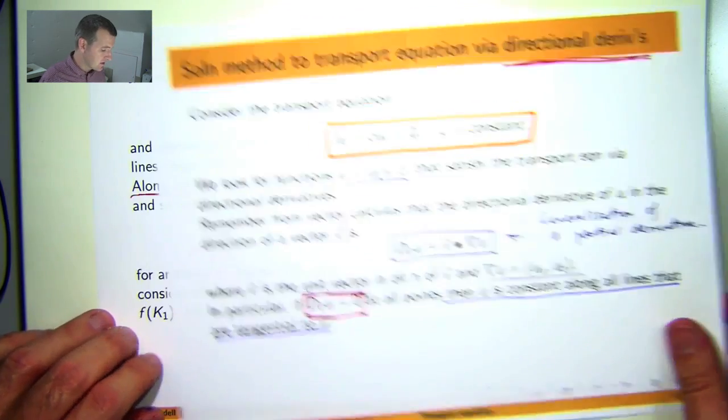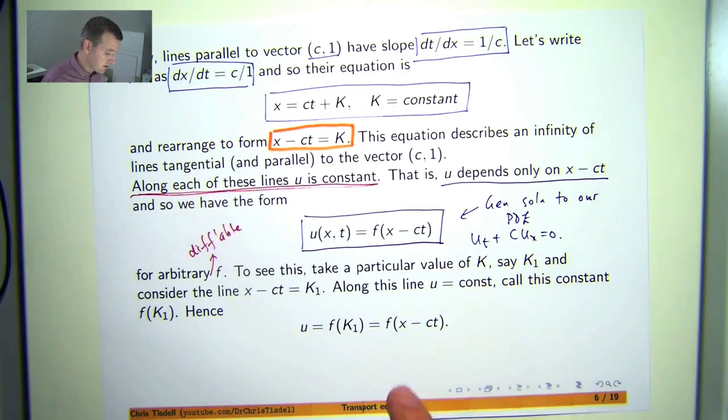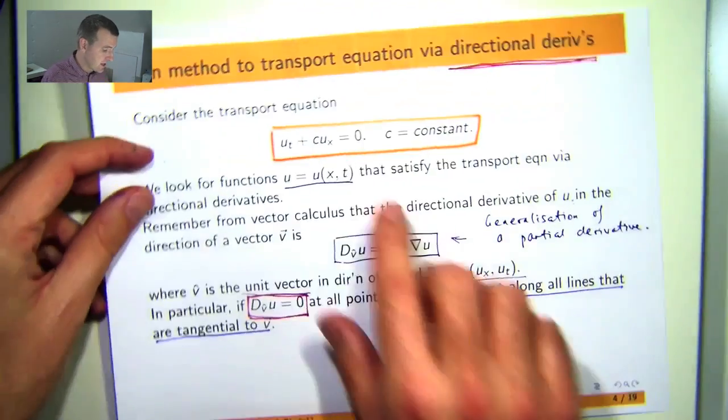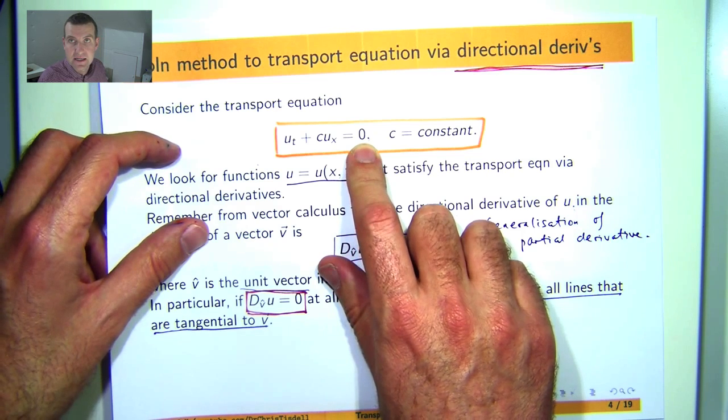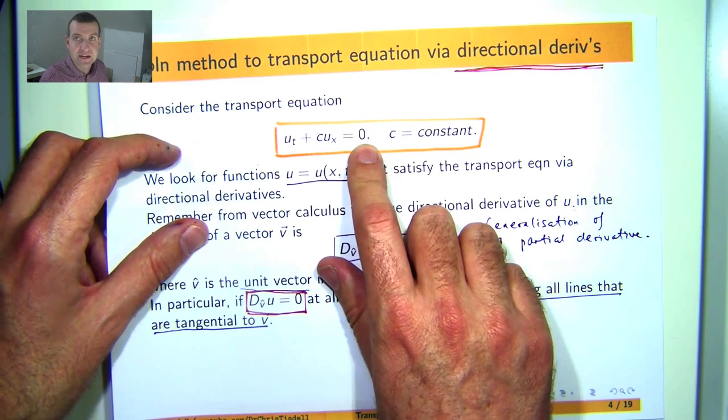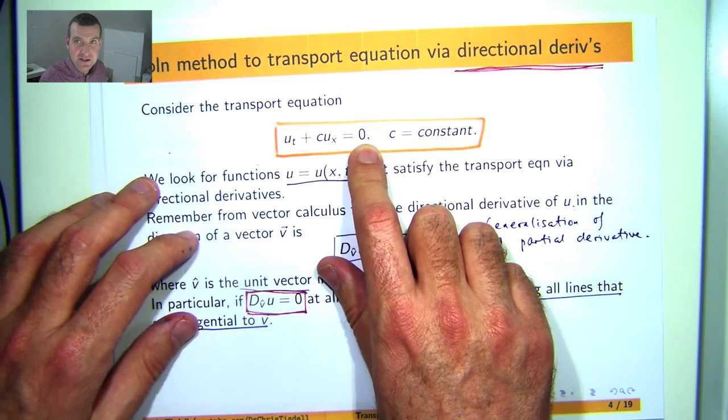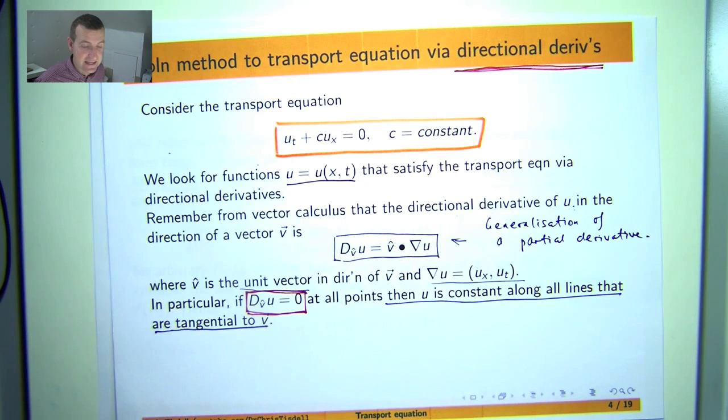Now in other videos, I'm going to do examples of solving particular transport equations. And I'll also solve the inhomogeneous or the non-homogeneous form of the transport equation. So for example, instead of having 0 there, you have a f depending on, say, x and t. That's the subject of another video. Thanks for watching. I hope you found this useful. And look out for my next video on the transport equation.